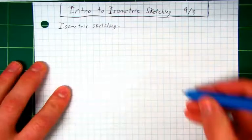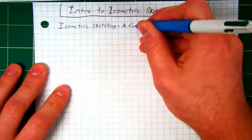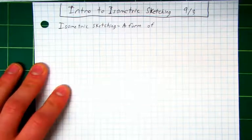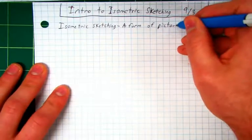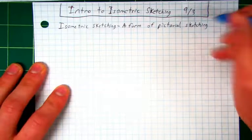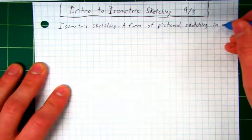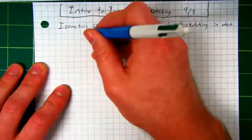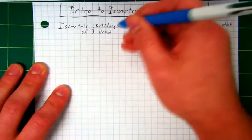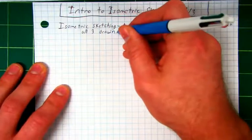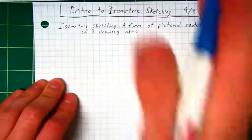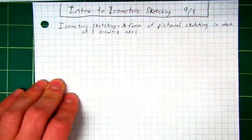So, isometric sketching is a form of pictorial sketching in which all three drawing axes—or I guess it's axes, because axes isn't a word—all three of the axes, so that's the x, y, and z-axis, right? That's what it's talking about.